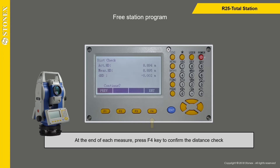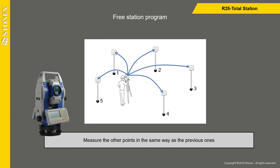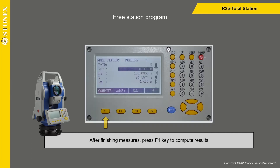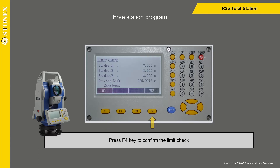At the end of each measure, press F4 key to confirm the distance check. Measure the other points in the same way. After finishing all measures, press F1 key to compute results, then press F4 key to confirm the limit check.